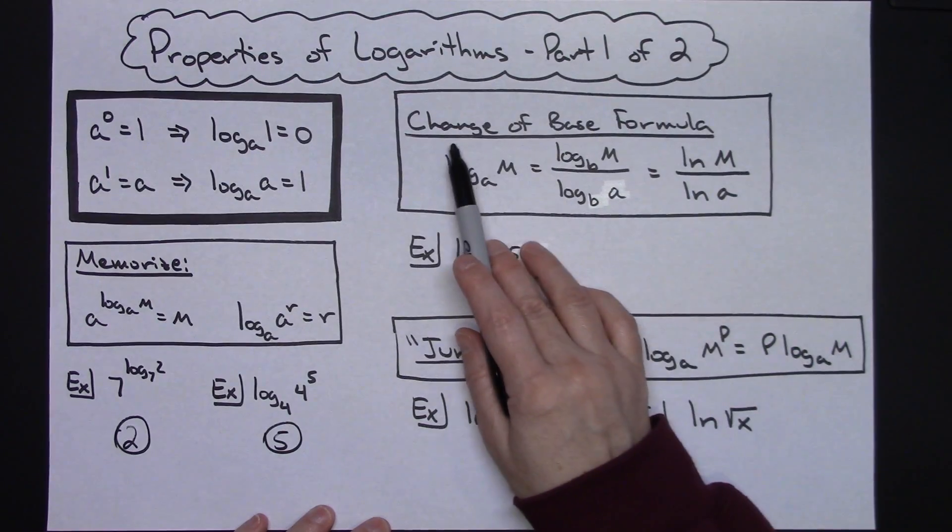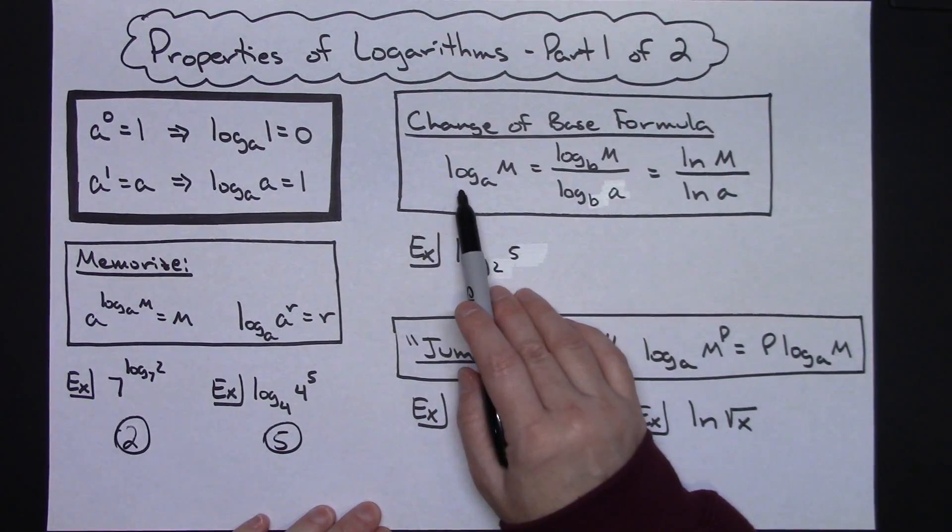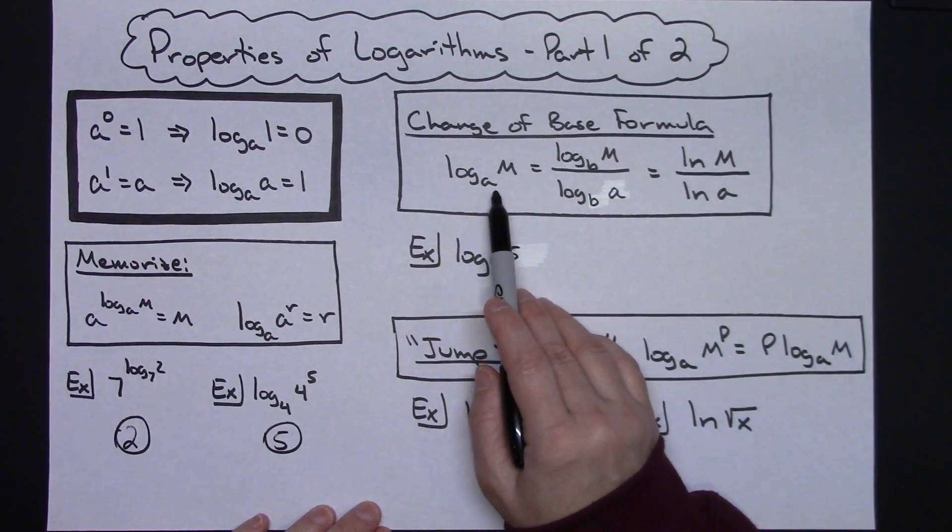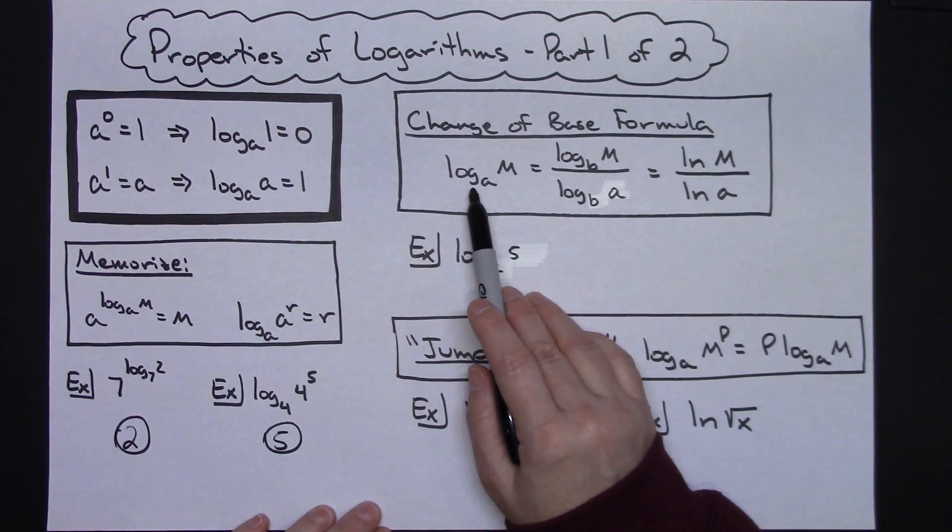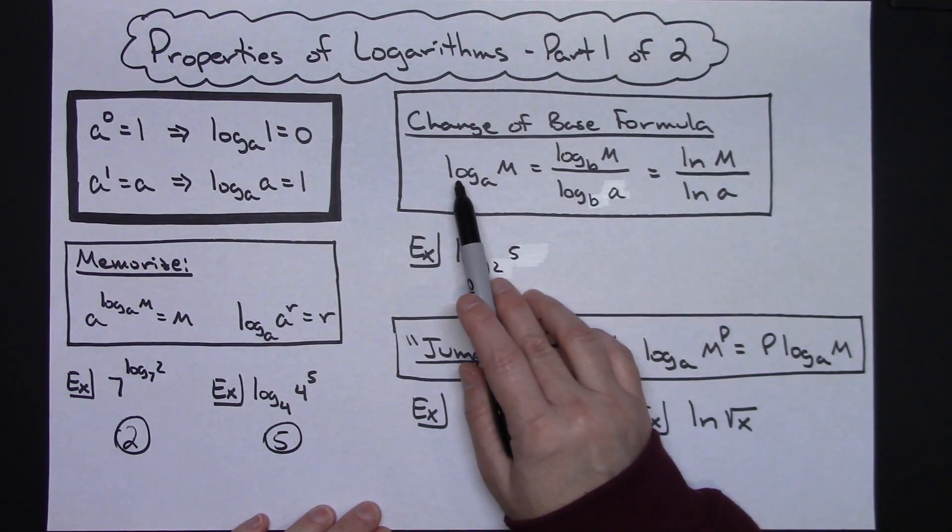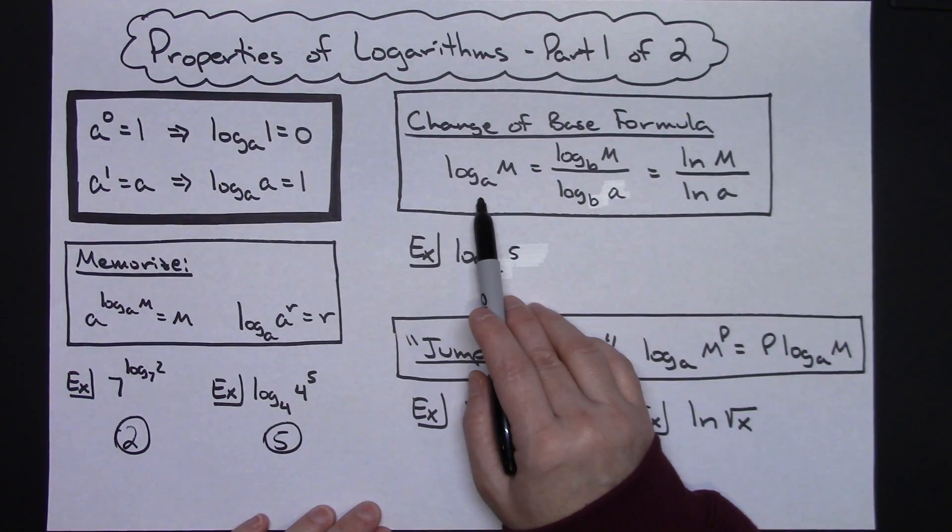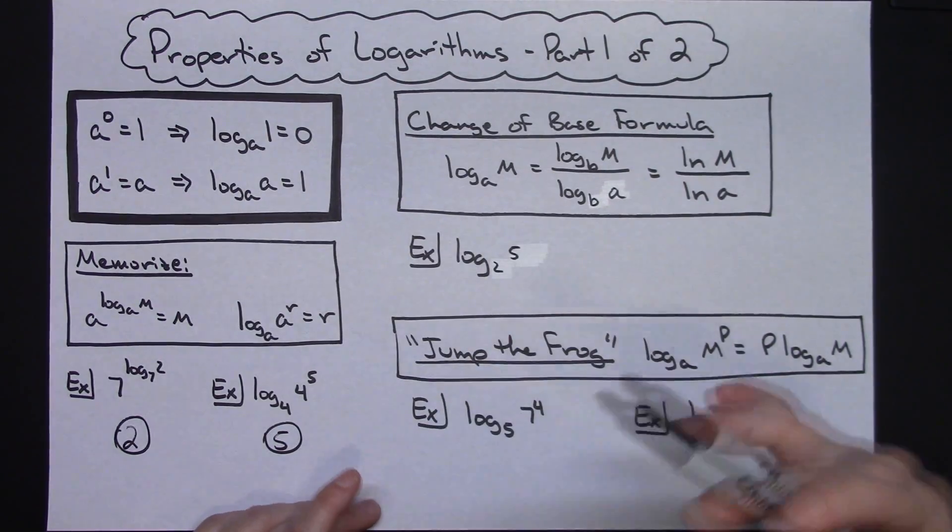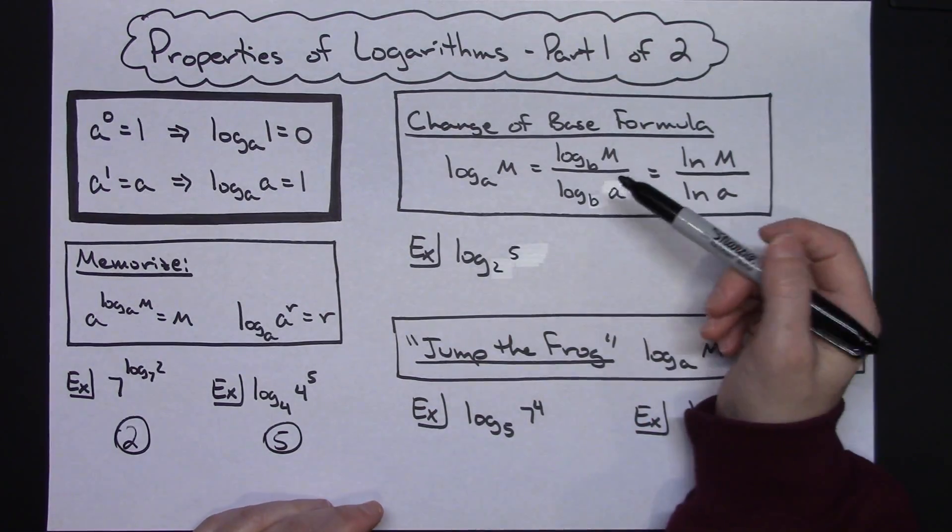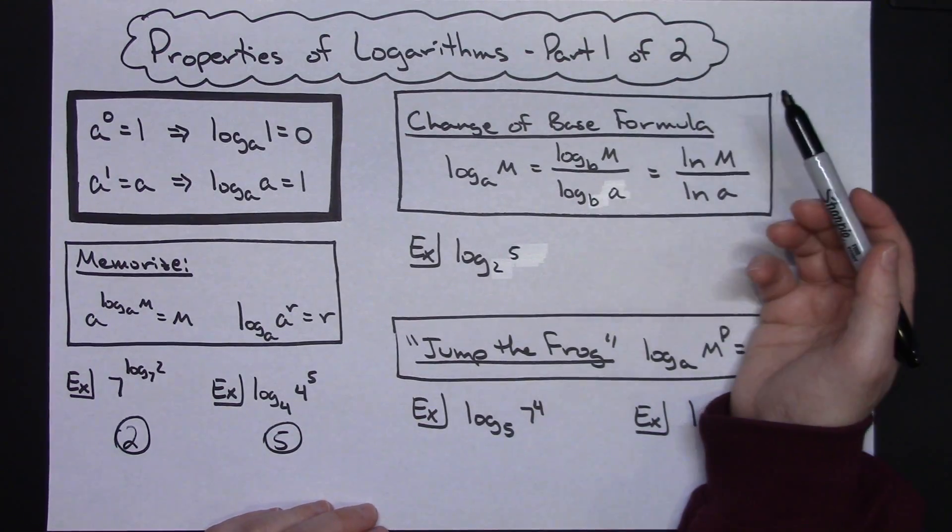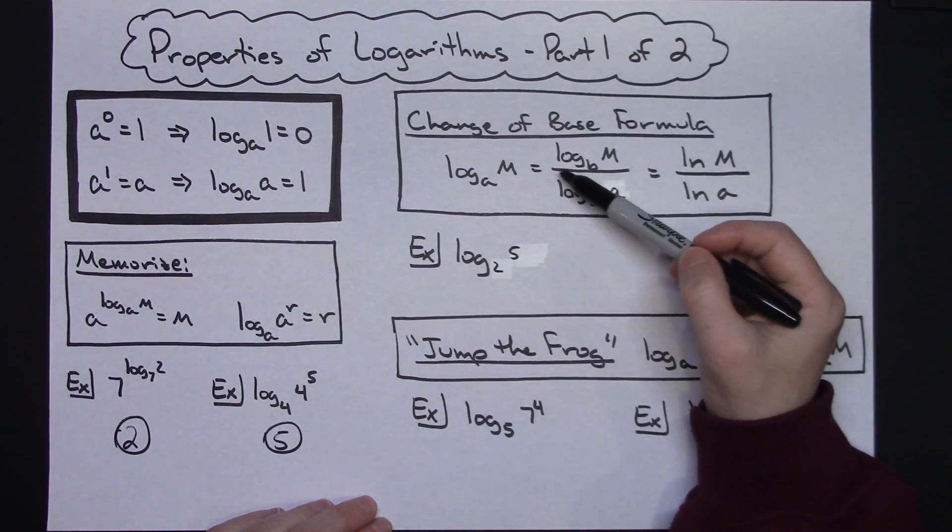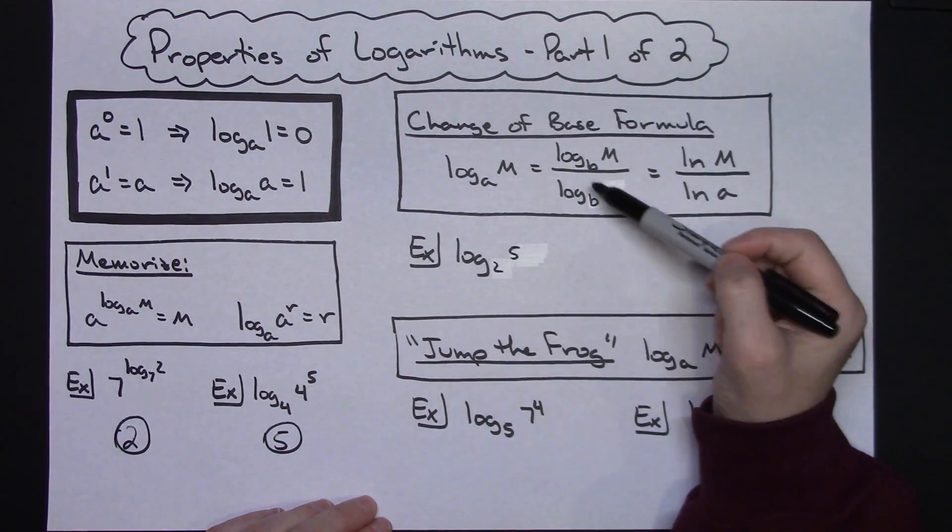There is also a change of base formula, which basically says that you can evaluate this log by using the change of base formula. If I put the log of m base a, I can rewrite that and choose any base that I want. Usually we will go to a base of 10 just because that's the easiest way to do this, but it would be the log of m divided by the log of a.